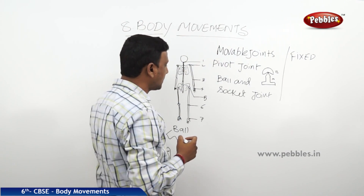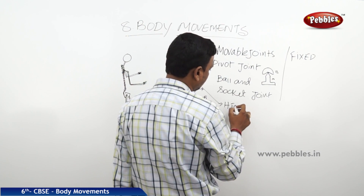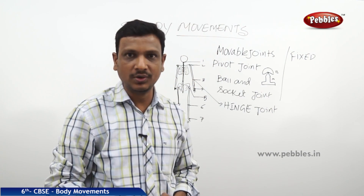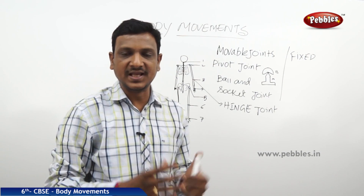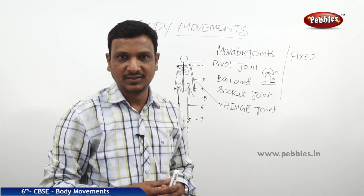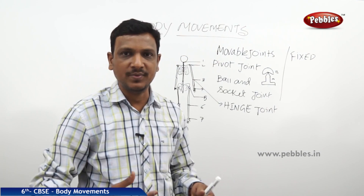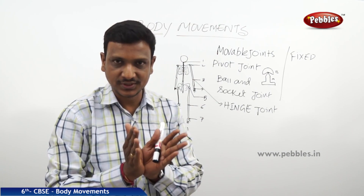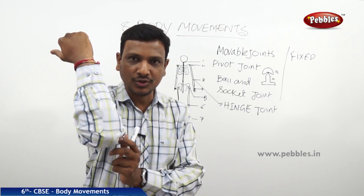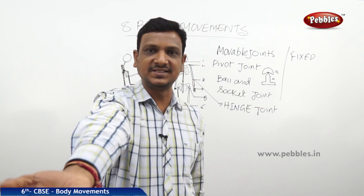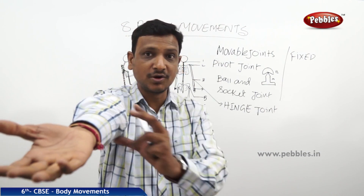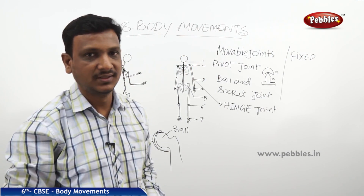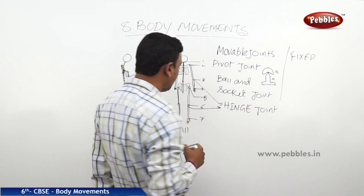The next joint is the hinge joint. Just like the hinges of a door — made of iron, steel, or brass — they allow opening movement in one direction, like opening and closing a book. Hinge joints are found in the elbows and knees. Your elbow opens up to about 180 degrees; you cannot bend it further because the hinge joint allows movement only to that extent.